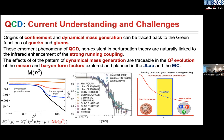The quark-gluon vertex, when we study the gap equation, has about 12 form factors or structure functions. Most of them have the same structure — infrared enhanced, especially the ones which contribute more towards mass generation, and then they fall off with some power of 1/p² depending on how they are constructed, with logarithmic corrections. People who study gluon masses see the same kind of behavior. Running coupling has more or less the same kind of behavior.